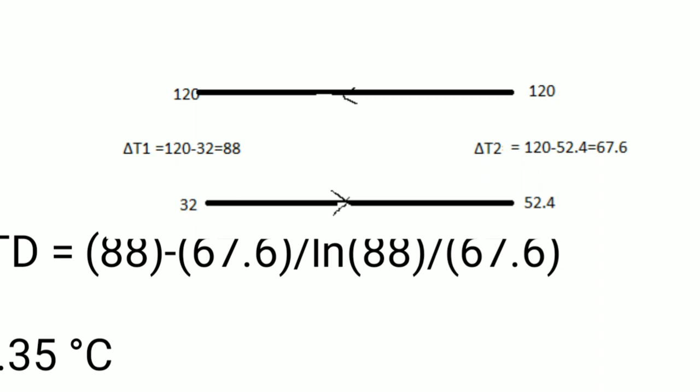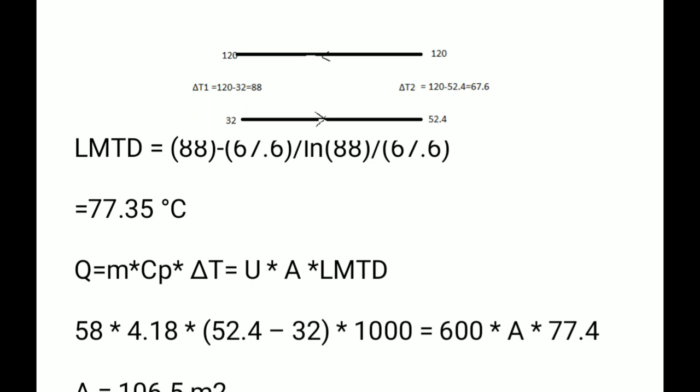In this counter-current exchanger, the hydrocarbon is condensing at a constant 120°C. Water enters at 32°C and leaves at 52.4°C. Delta T1 = 120 − 32 = 88°C and delta T2 = 120 − 52.4 = 67.6°C. Substituting into the LMTD formula gives LMTD = 77.35°C.